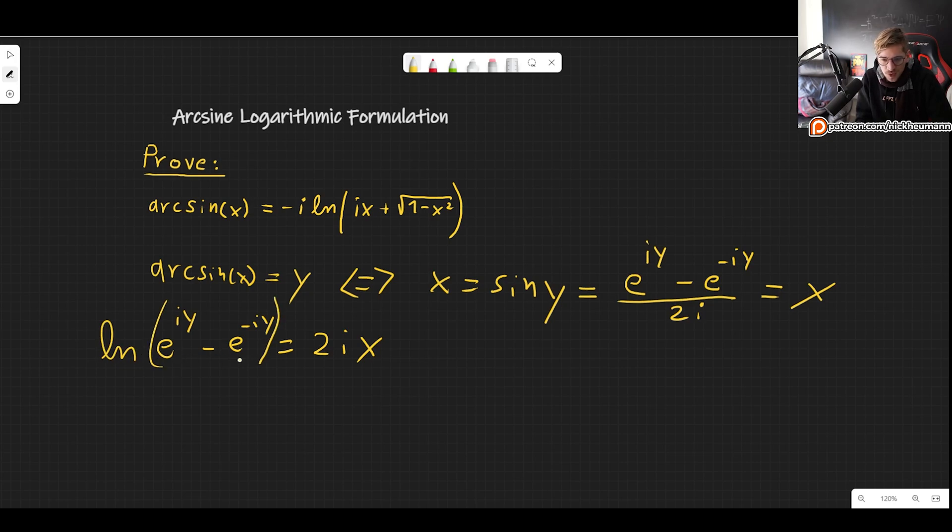So if we were to apply the natural log on both sides here, we wouldn't really get anywhere. So first, we need to do some sort of algebraic manipulation. So what we should do is get rid of one of those exponentials. So what we can do is multiply both sides by e to the iy.